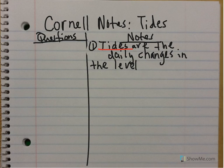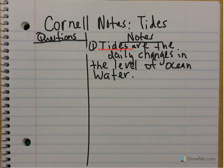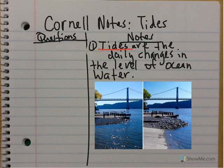So first and foremost, tides are the daily changes in the level of ocean water. Let's look at some pictures to see that.